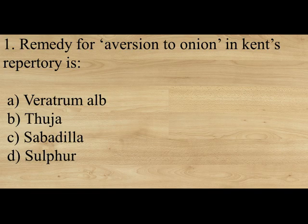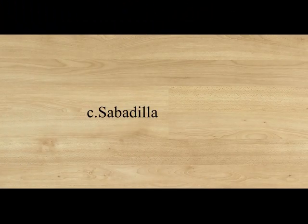The first question: Remedy for aversion to onions in Kent's repertory is? Option A: Veratrum album. Option B: Thuja. Option C: Sabadilla. Option D: Sulphur. The answer is Option C, Sabadilla.